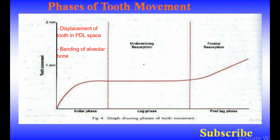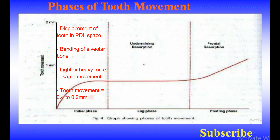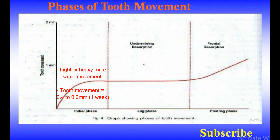The initial phase movement also involves probable bending of the alveolar bone to a certain extent. Studies have shown that both light and heavy forces displace the tooth to the same extent during this phase. The tooth movement in the initial phase is between 0.4 to 0.9 mm and usually occurs within a week's time.